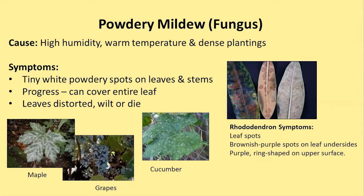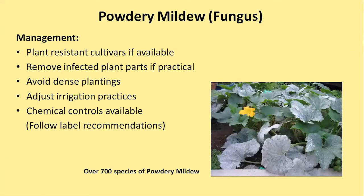Rhododendrons have a completely different symptom when they have powdery mildew. Instead of white powdery parts, they start off with leaf spots—brownish purple spots on the leaf undersides and purple ring-shaped spots on the upper side of the leaves. There are many different types of plants that contract powdery mildew. If you see it starting, you can remove some of those plant parts to help control it, but if it's gotten away from you, that's probably not going to work.